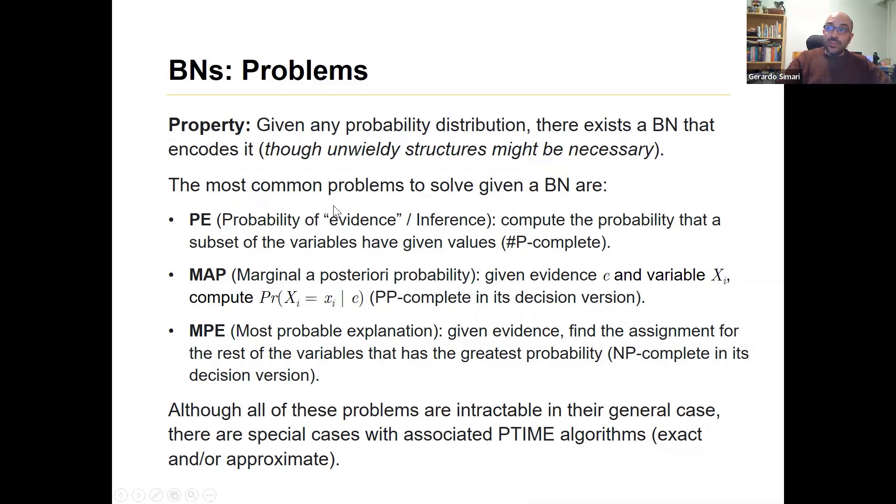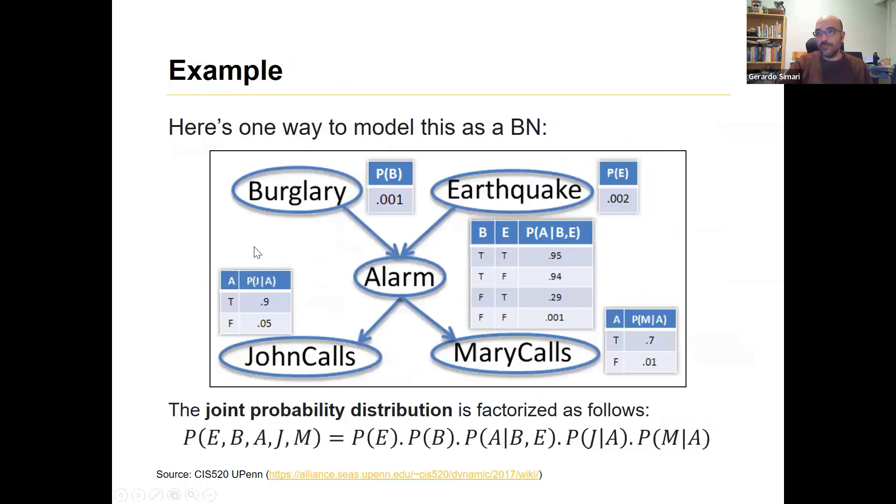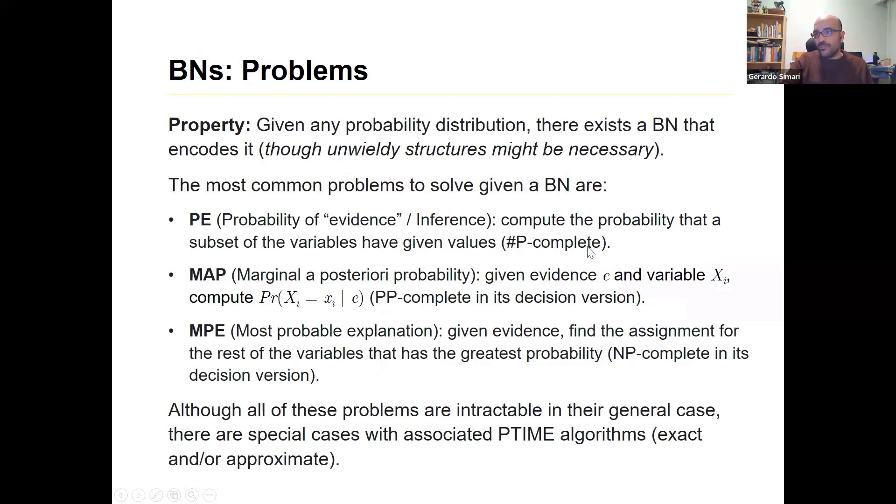And there are several common problems to solve given a BN. One of the most common is probability of evidence, so compute the probability that a subset of variables have given values. Marginal a posteriori probability, that is, given evidence E in a variable XI, compute the probability. And most probable explanation, that is, given evidence, find the assignment for the rest of the variables that has the greatest probability. So for instance in our case, we might say John calls and Mary doesn't, then what's the most probable setting for alarm, right?